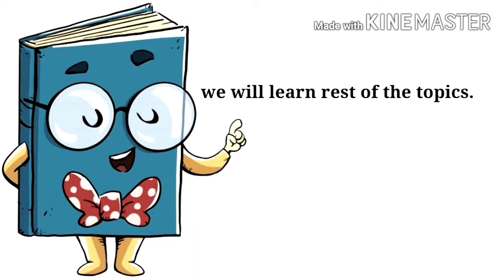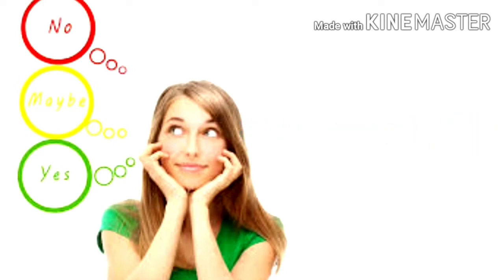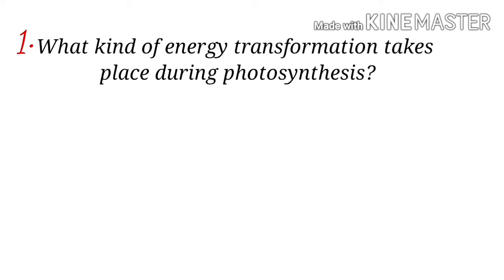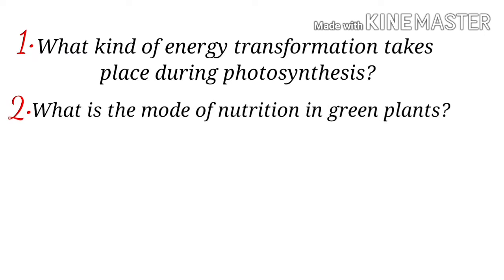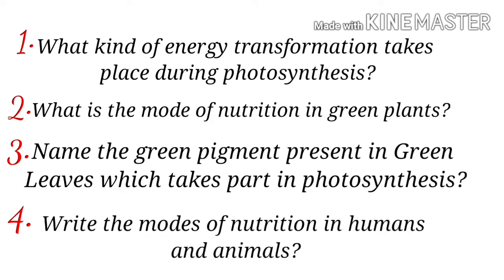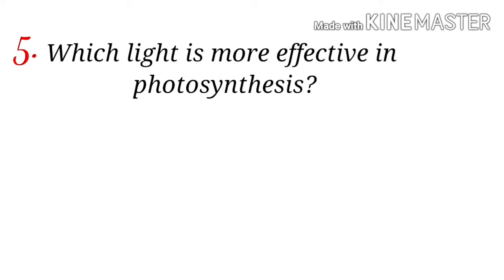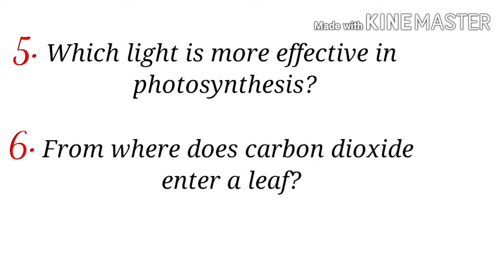But before starting the topic, I am going to give you some questions and you will have to answer them. Question number one: what kind of energy transformation takes place during photosynthesis? Question number two: what is the mode of nutrition in green plants? Question number three: name the pigment present in green leaves which takes part in photosynthesis. Question number four: write the mode of nutrition in humans and animals. Question number five: which light is more effective in photosynthesis? And the last one: from where does carbon dioxide enter a leaf?